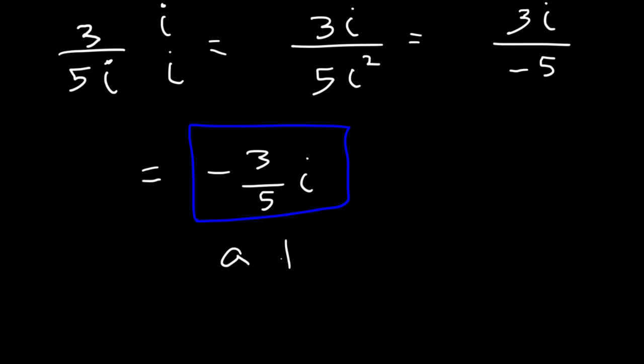Standard form is a plus bi. In this problem, a is 0. So it's a minus 3 over 5 times i, or 0 minus 3 over 5 times i.